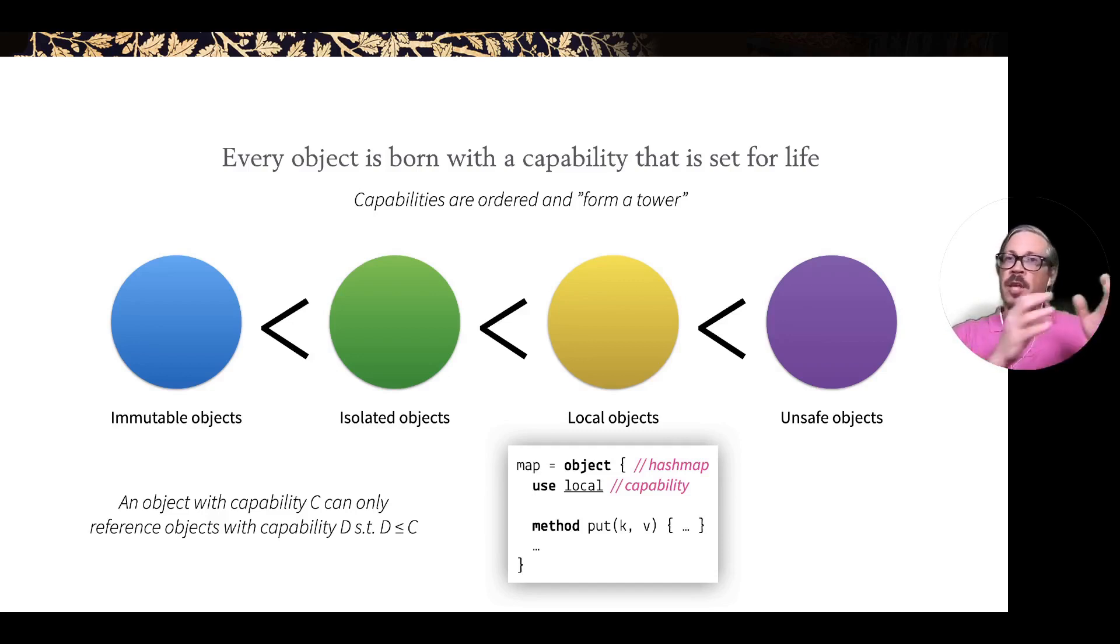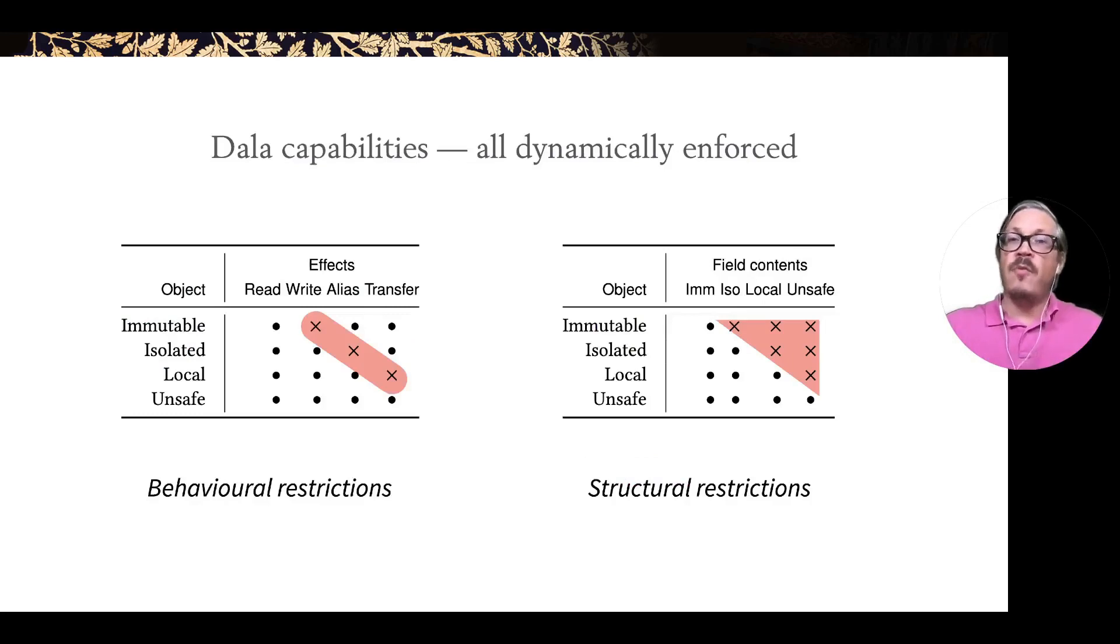The capabilities form a kind of a tower, lying down for layout reasons on a slide. You can only reference things that are to the left of yourself. You have behavioral restrictions and structural restrictions stemming from these object capabilities, all of which are dynamically enforced. If you have an immutable object, you can read that object, you can alias it, you can transfer it, but you can't write it.